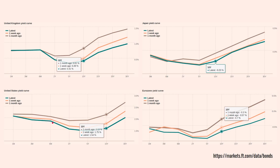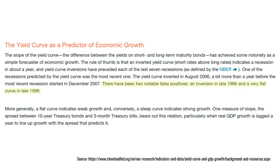Normally the yield curve is upward sloping because investors demand a higher rate of interest for locking in a fixed rate of borrowing for a longer period. In the US the yield curve has turned out to be a fairly good predictor of economic growth, and the Cleveland Federal Reserve Bank publishes a model which takes the difference in yield between short-term and long-term bonds and forecasts GDP growth and the probability of a recession in the coming year.